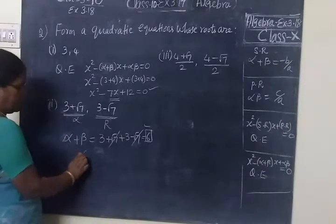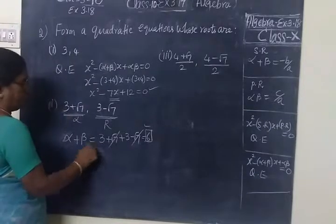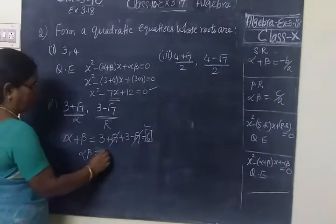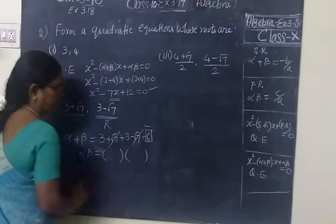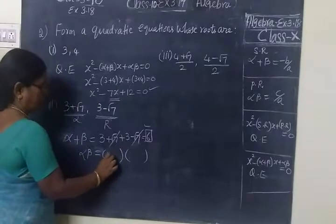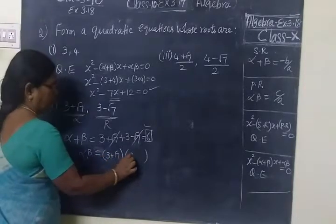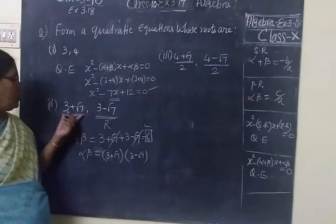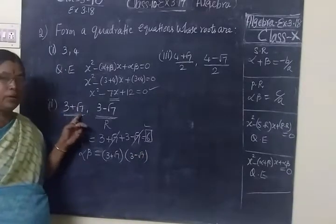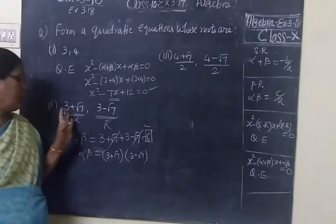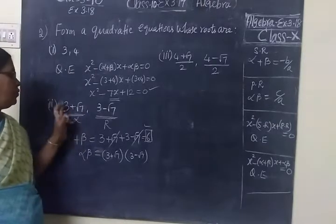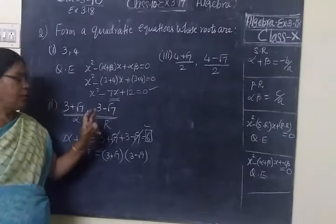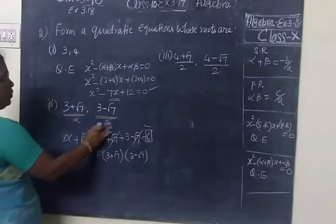Next, we need product of the roots. Product means alpha beta, multiply. So 3 plus root 7 times 3 minus root 7. This is a simple question only. The whole is alpha, is beta and some students may confuse, not that way. It is completely alpha, then second one completely beta.